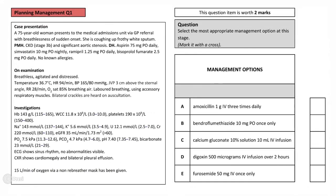This is a 75-year-old woman who presents to the medical admissions unit via a GP referral with sudden onset breathlessness. She is coughing up frothy white sputum. Her past medical history includes chronic kidney disease and aortic stenosis. She takes aspirin, simvastatin, ramipril and bisoprolol, and she does not have any allergies.